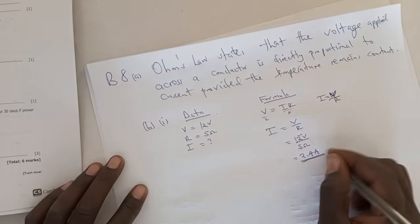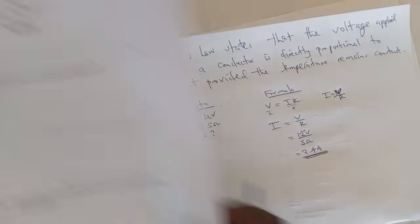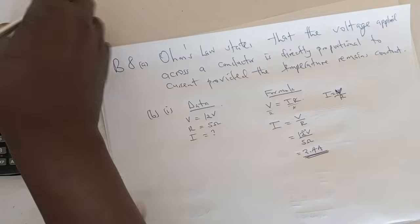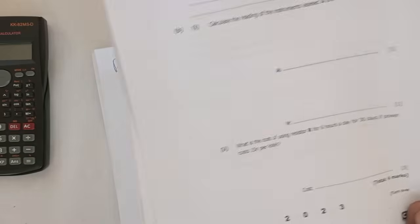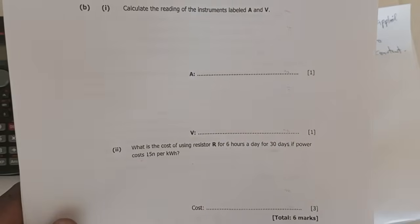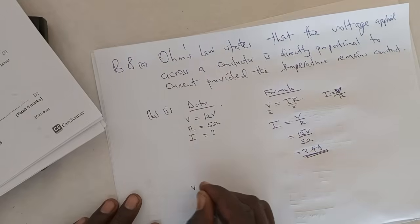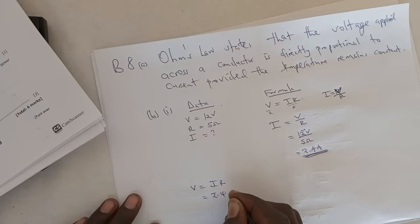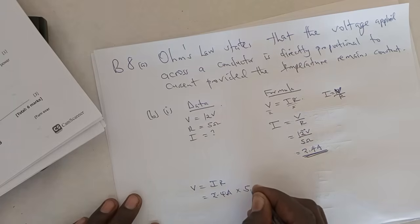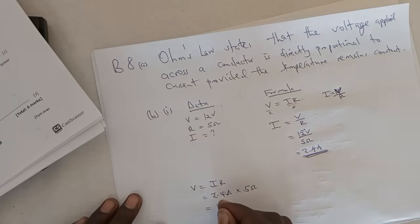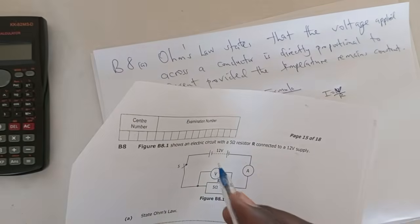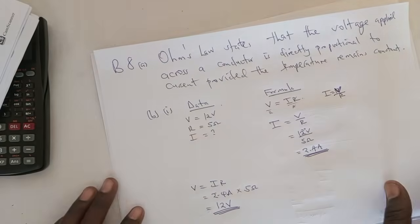Now we calculate for V using the same formula: V = IR. Our I is 2.4 amps multiplied by 5 ohms, which gives 12 volts. This confirms that the supply was indeed 12 volts.